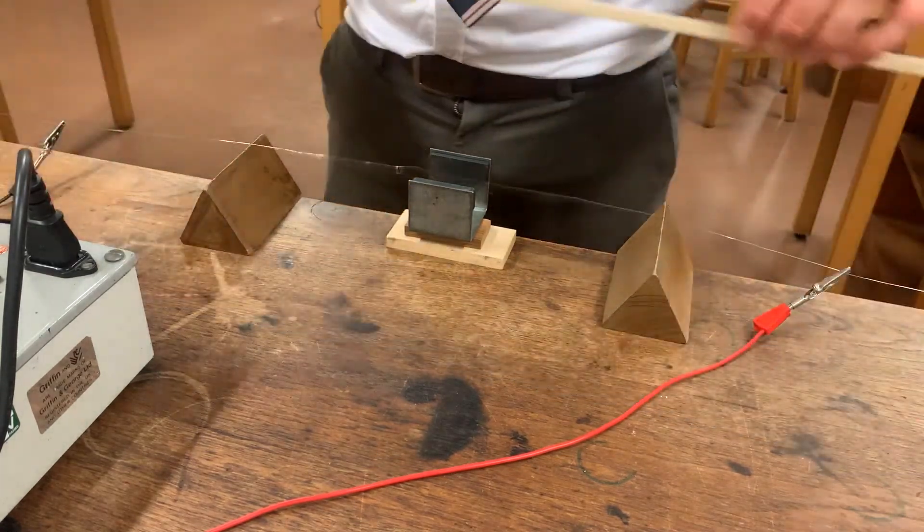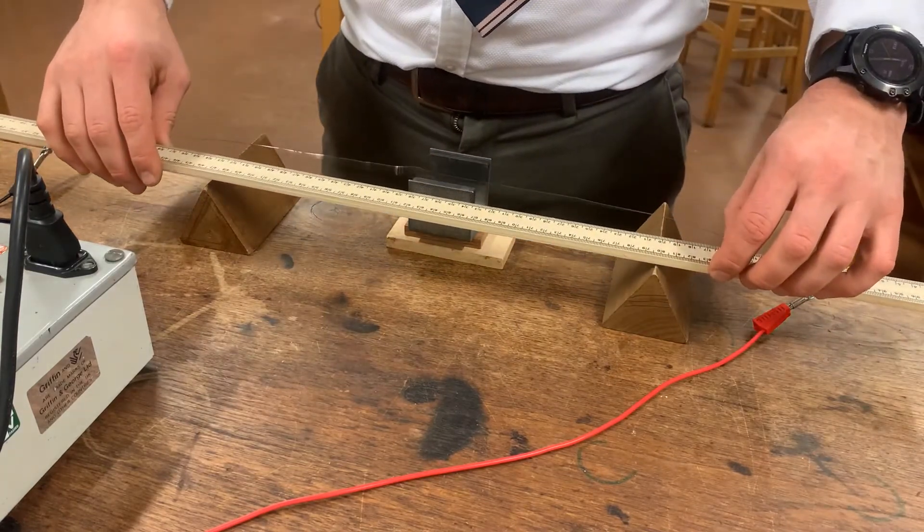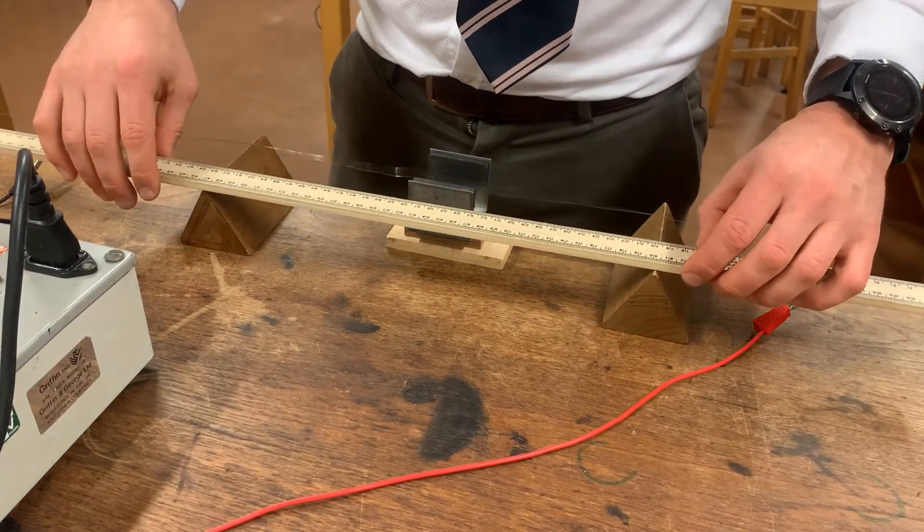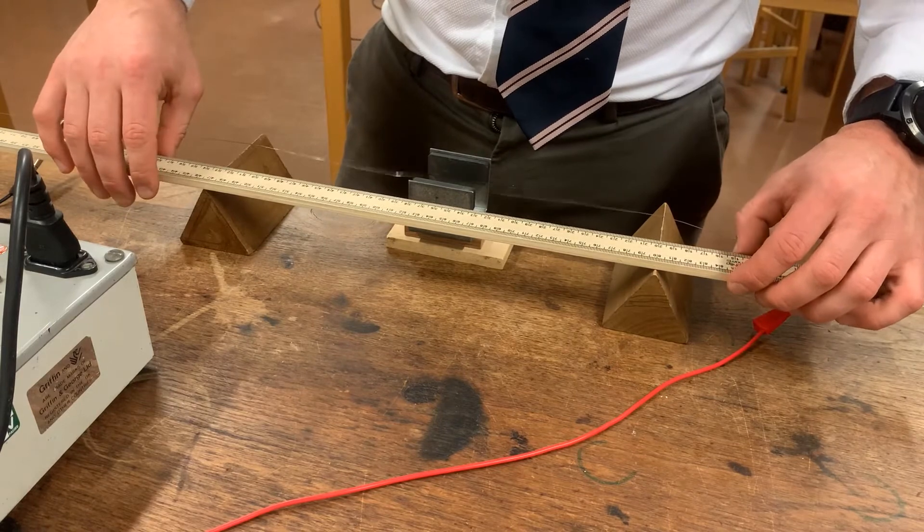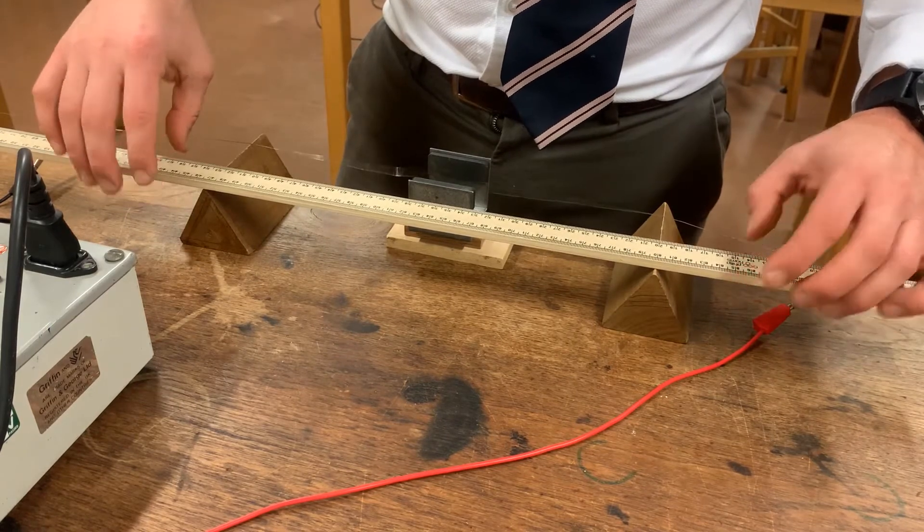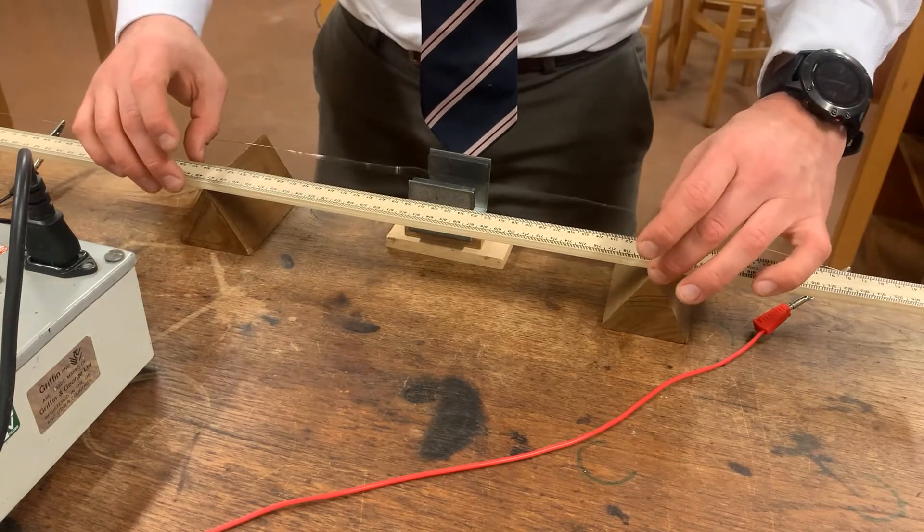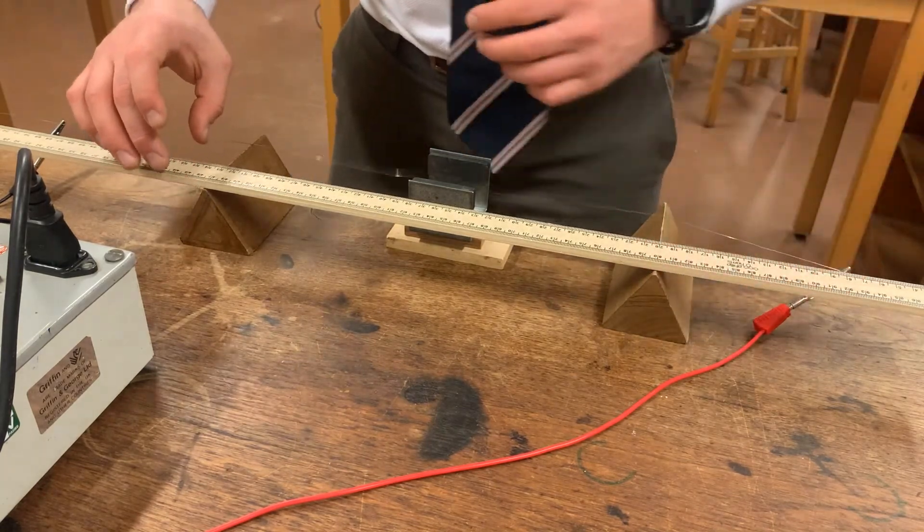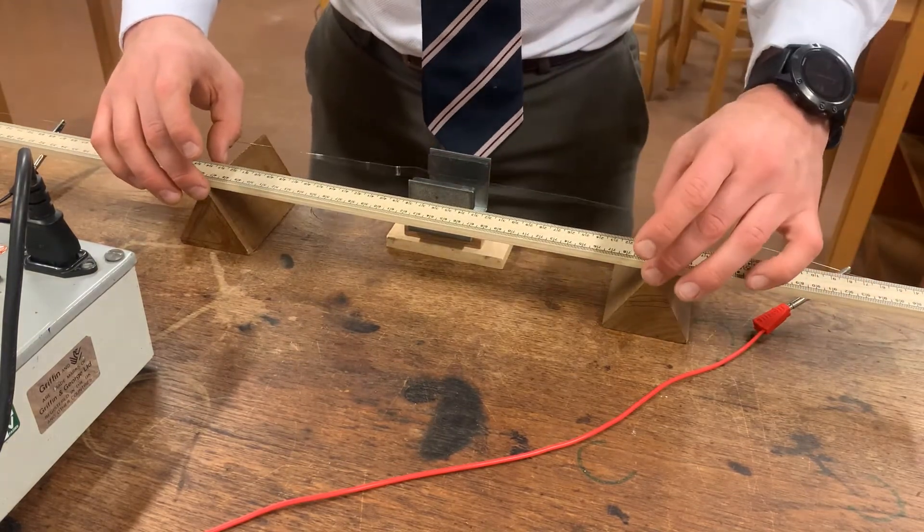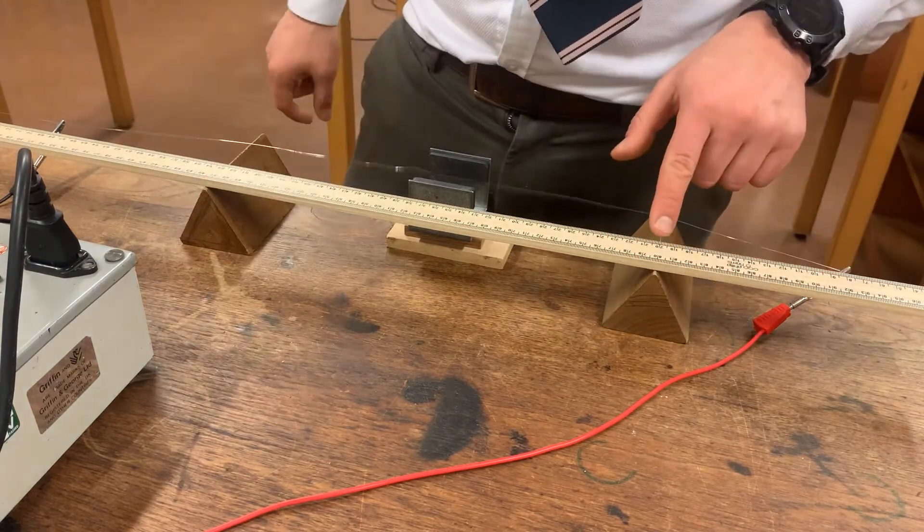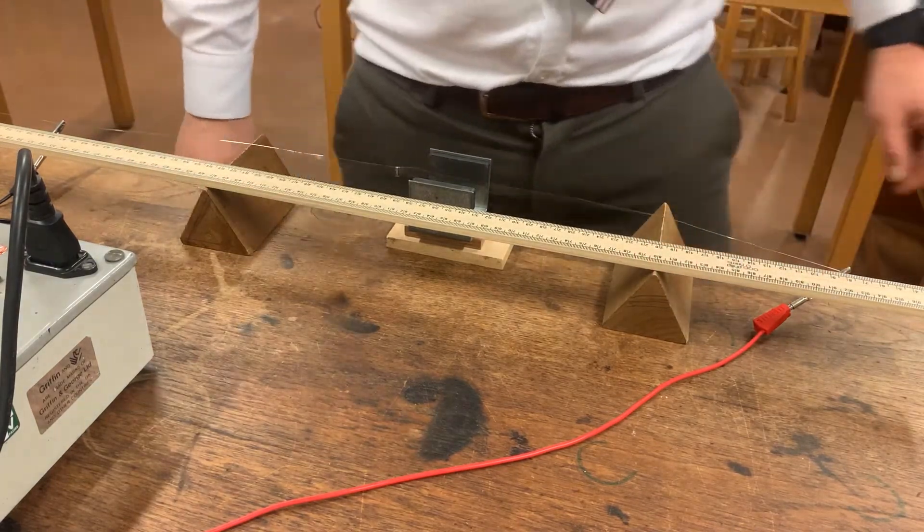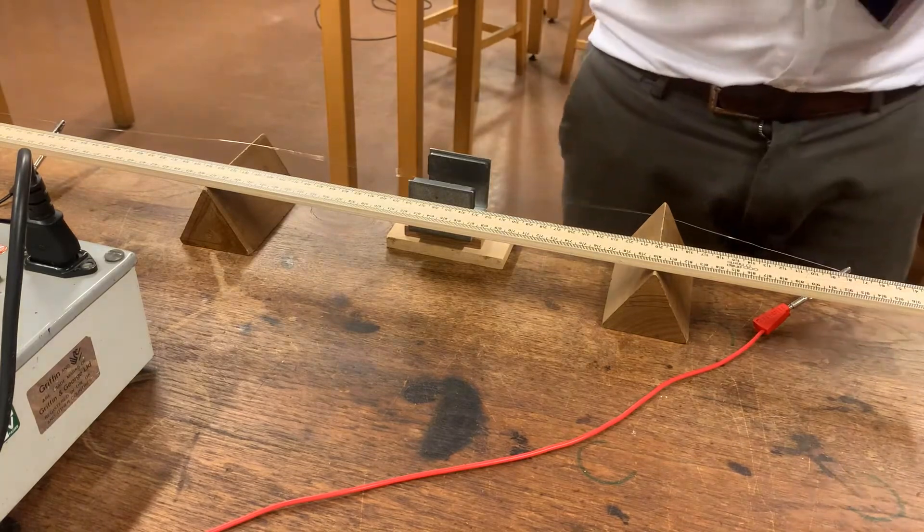Now what I'm going to do is measure the length between the two prisms. I'm going to place that so that the 20 centimeter mark is over that and I'm going to measure the distance between them. So that will require two measurements on this ruler, one at this end, one at this end. I'm going to write both of them down in fact.